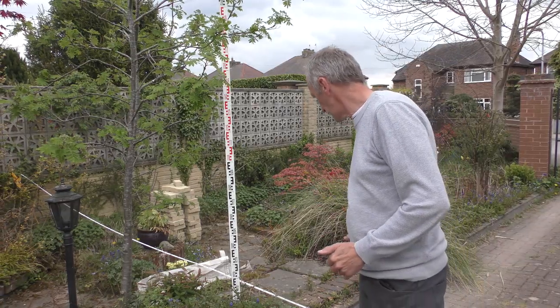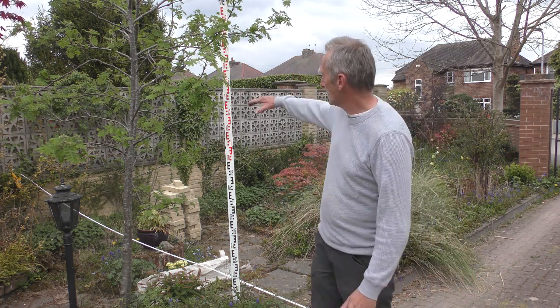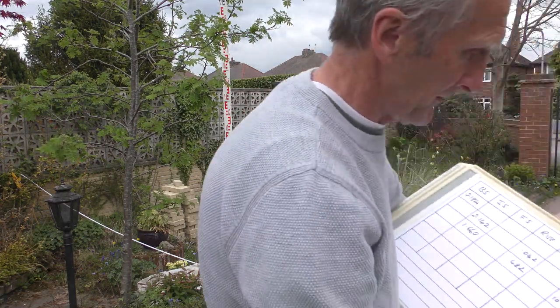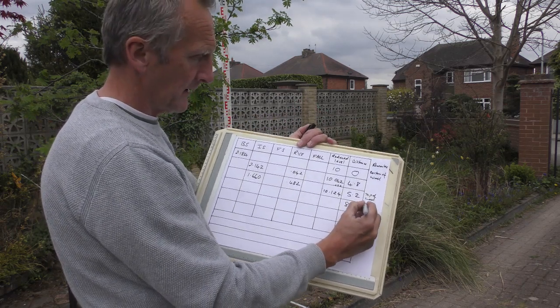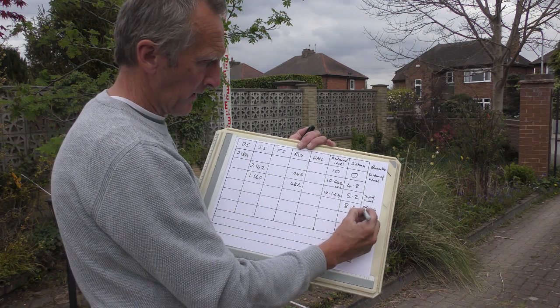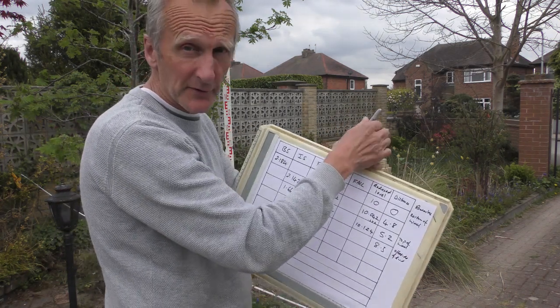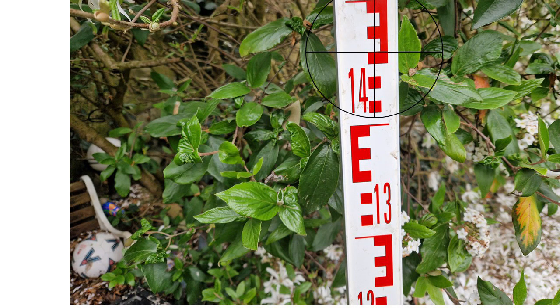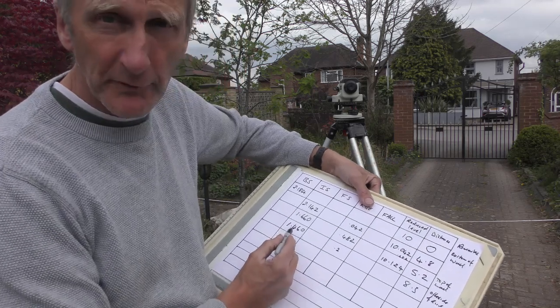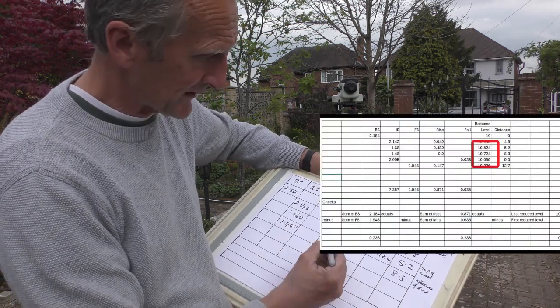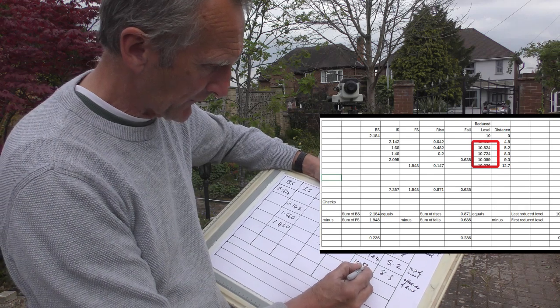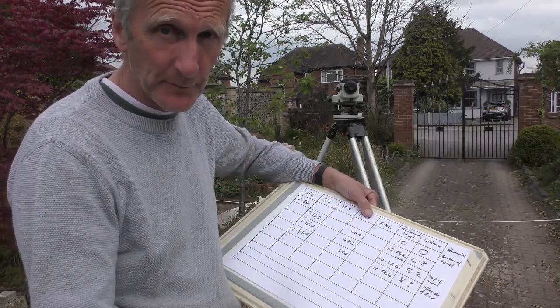Now I'm going to take the one straight across from that — at the other side of the drive. The reading across the tape is 8.3 meters; I'll write that in. Taking the reading with the quick set level: 1.460. Booking the detail — take that away from the one above: 1.66 minus 1.460 gives 0.200. Again it's a rise, so I add that to the total: 10.324.